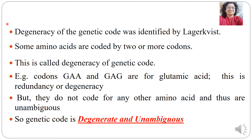The degeneracy of genetic code was identified by Lagervist. He observed that some amino acids are coded by two or more codons — this is called the degeneracy of genetic code. For example, GAA and GAG are both codons for glutamic acid. And because one amino acid has more than one codon, this is known as redundancy or degeneracy of the genetic code.